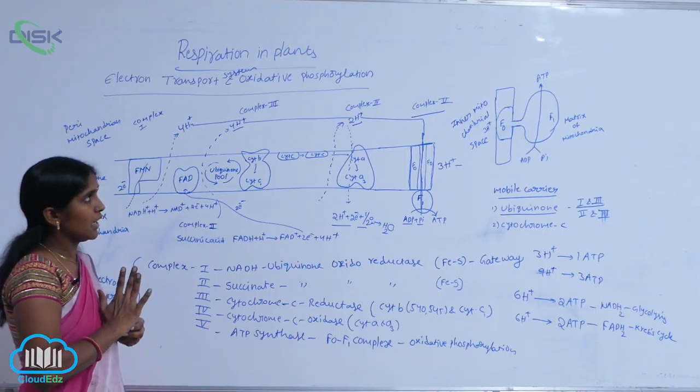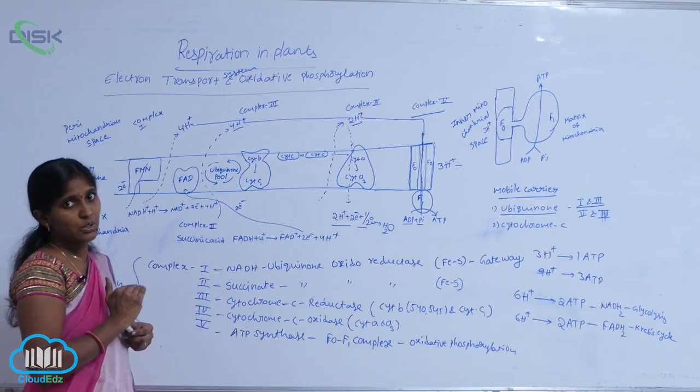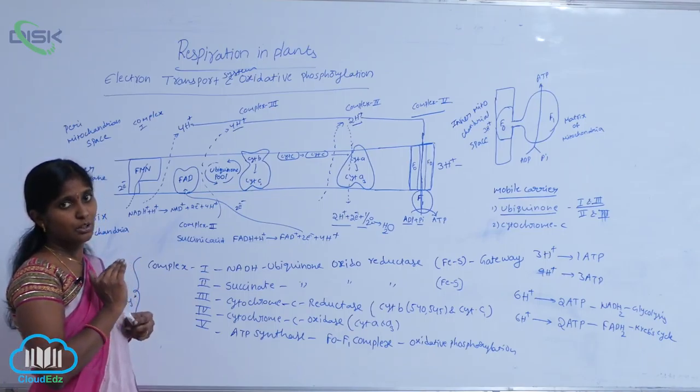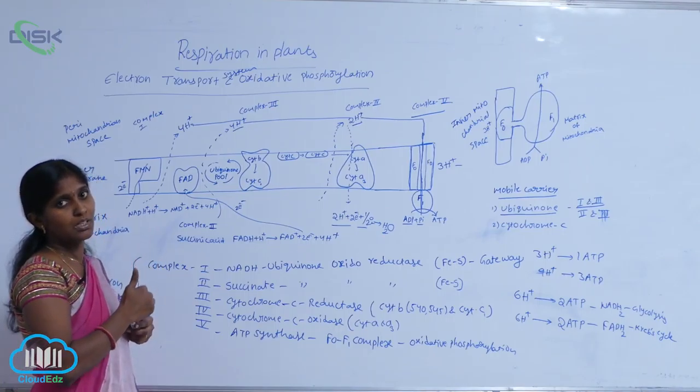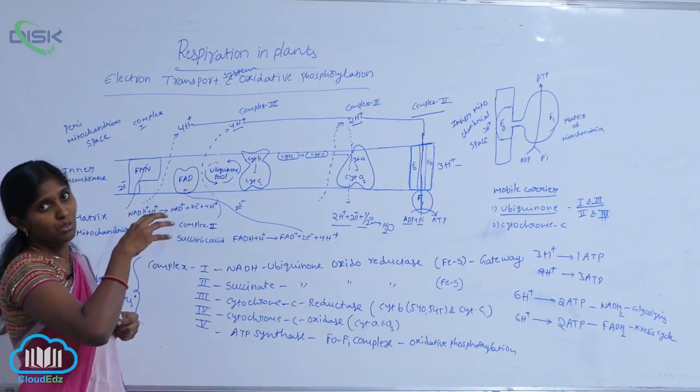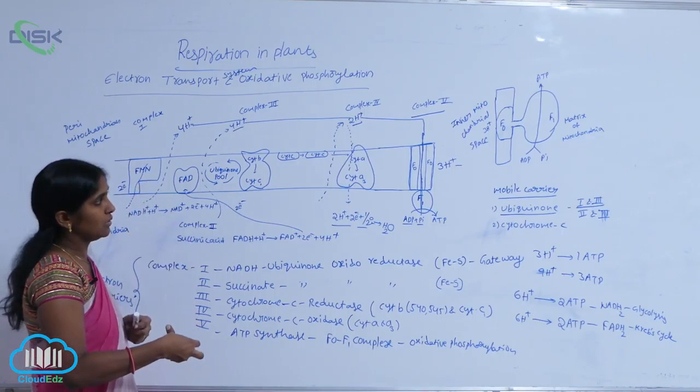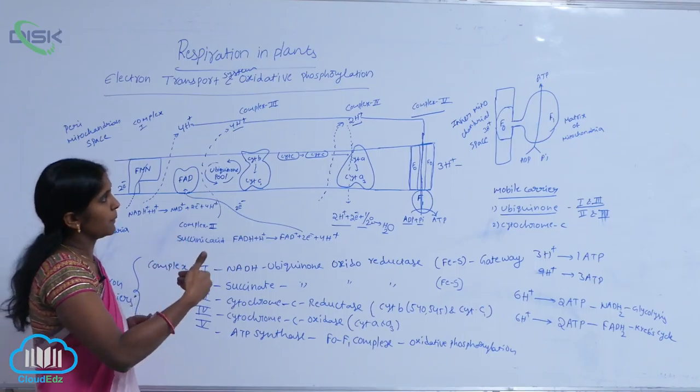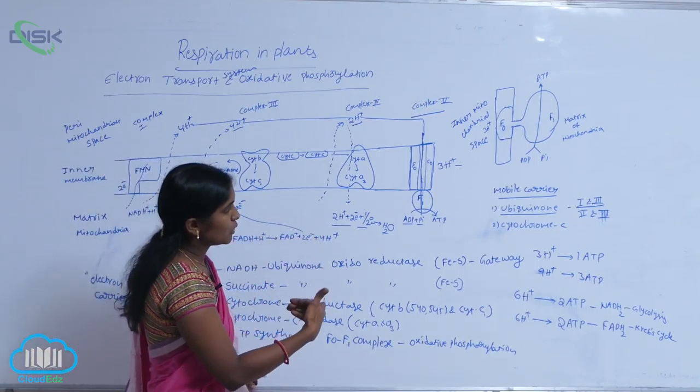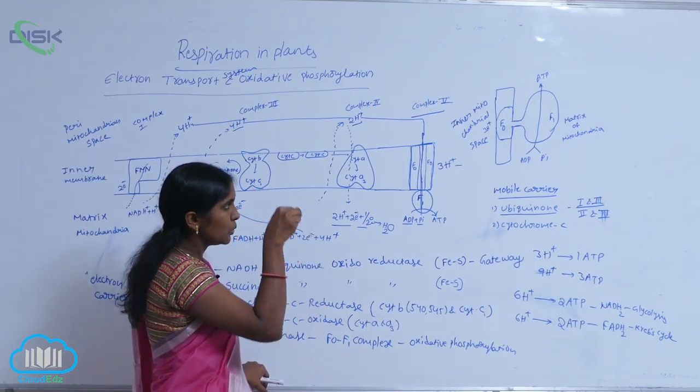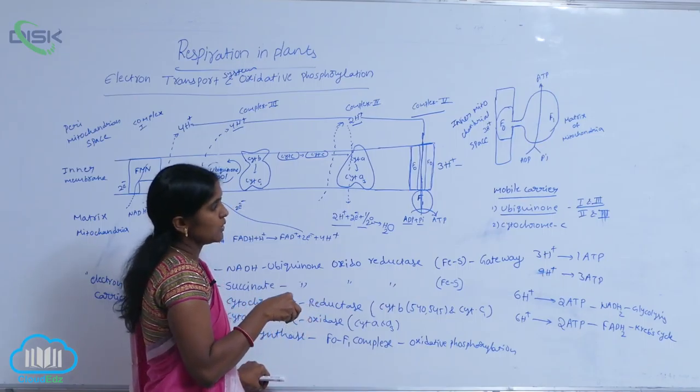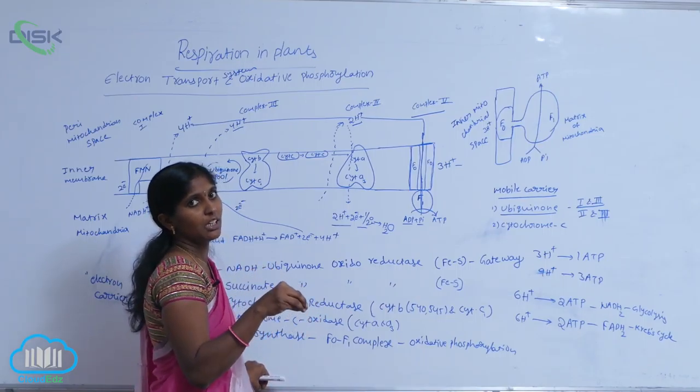In electron transport, for NADH2 oxidation, there is an accumulation of ten protons. When nine protons come from the intermembrane space to the matrix of mitochondria through the F1 granules, there is production of three ATPs.